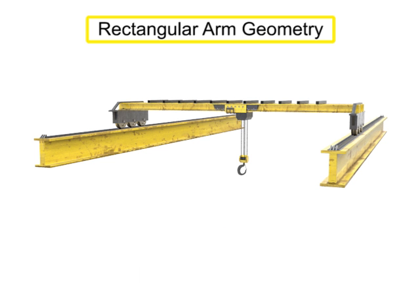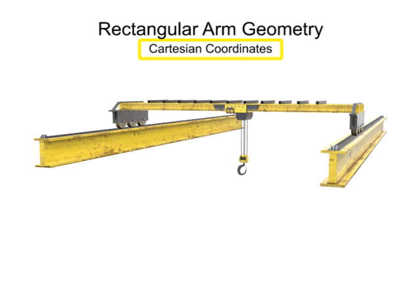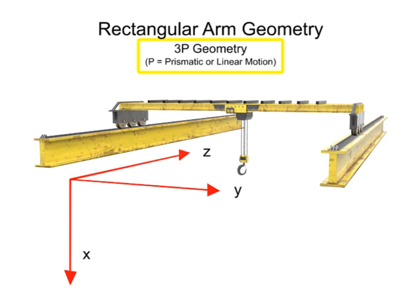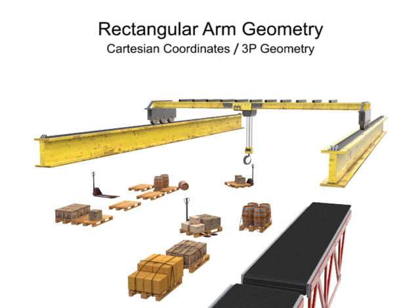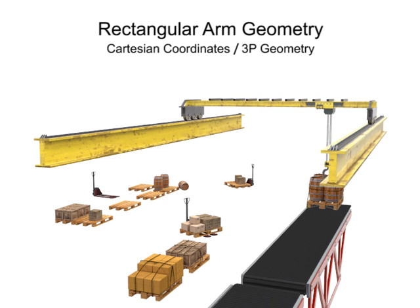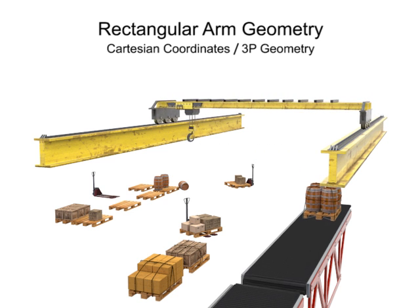Robots with rectangular arm geometry use Cartesian coordinates and move linearly along each of the X, Y, and Z axes. This type of movement is also called 3P geometry, where the P stands for prismatic or linear motion. This type of geometry is most commonly used with pick-and-place or large overhead-mounted robots.